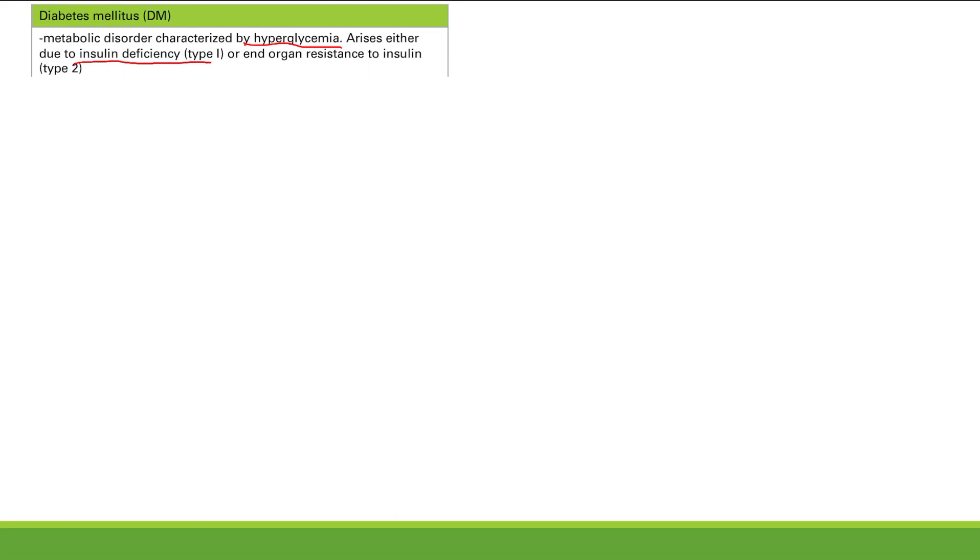Diabetes mellitus is a metabolic disorder characterized by hyperglycemia. You can get this hyperglycemia either due to deficiency of insulin — this is type 1 diabetes mellitus — or your end organs are resistant to insulin. So you do make insulin, but it doesn't work. Your cells in the rest of your body don't respond to it. That's type 2 diabetes mellitus.